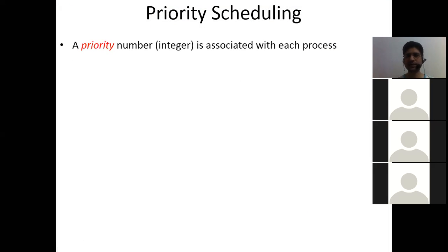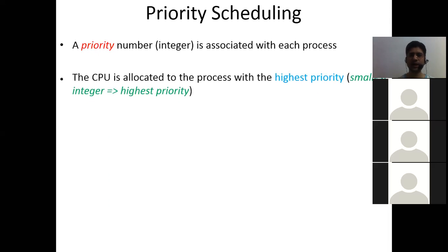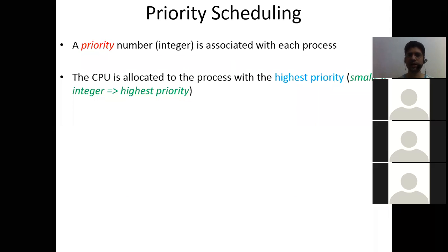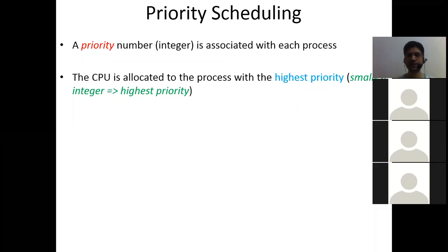A priority number — an integer — is associated with each process, denoting its priority. The CPU is allocated to the process with the highest priority. By convention, the smallest integer represents the highest priority, but some questions may use the largest integer as highest priority. If nothing is mentioned, assume the smallest integer is highest priority.